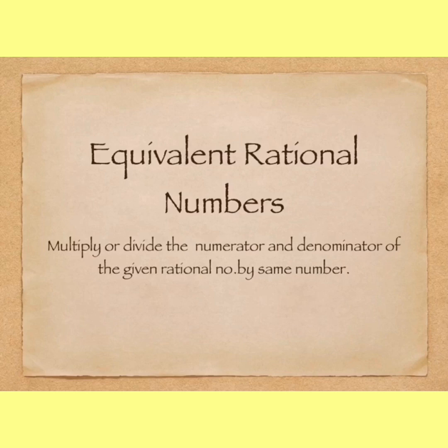Equivalent rational numbers: multiply or divide the numerator and denominator of the given rational number by same number.